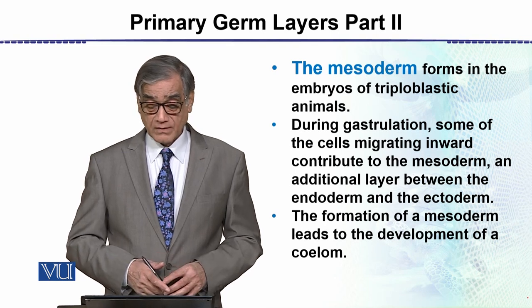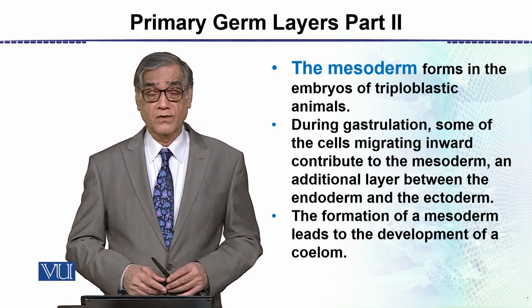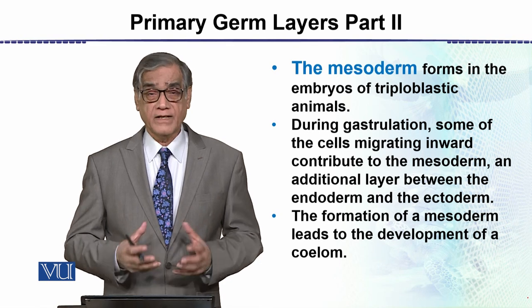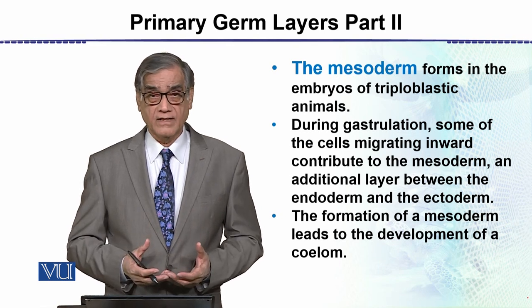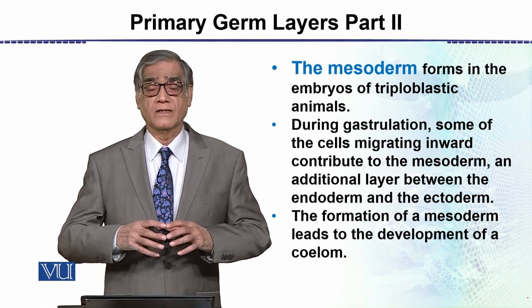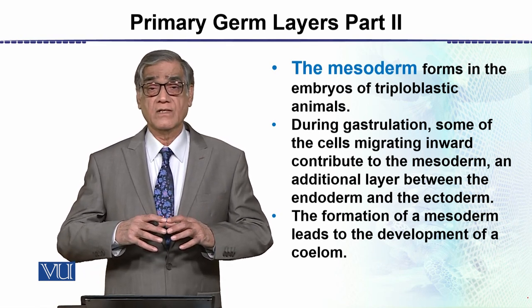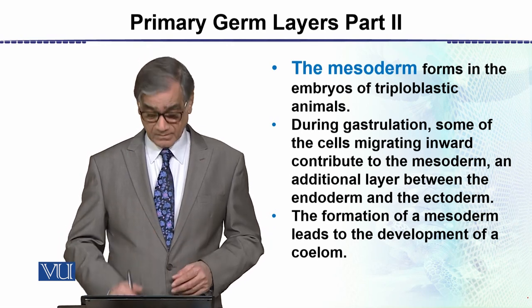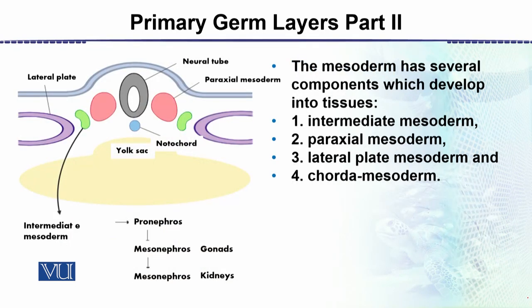The formation of the mesoderm leads to the development of a coelom — a body cavity — which is the cavity lined by mesoderm. In the diagram, we can see the structures which are actually derived from the mesoderm.